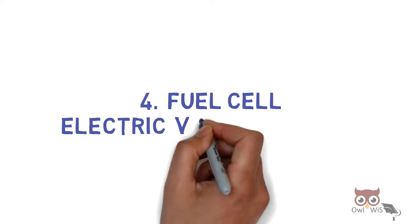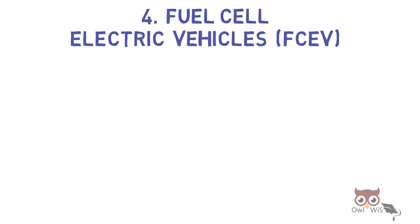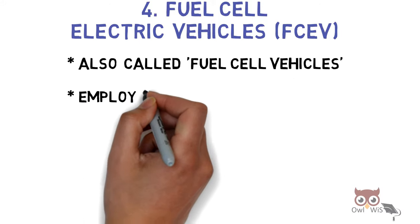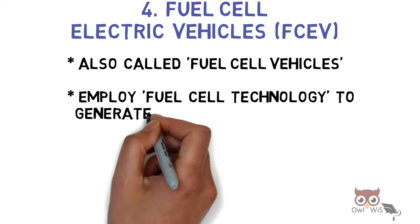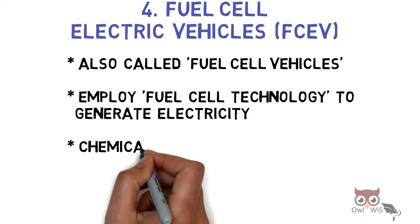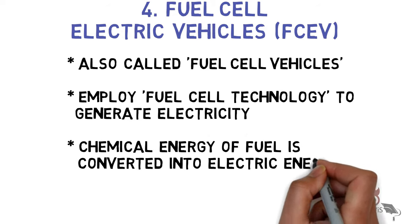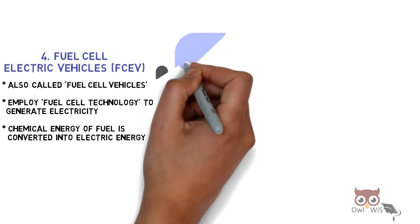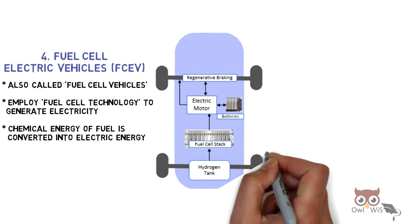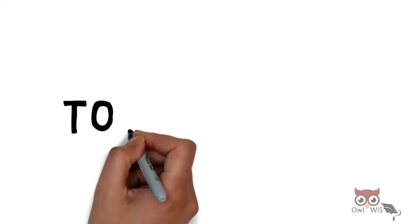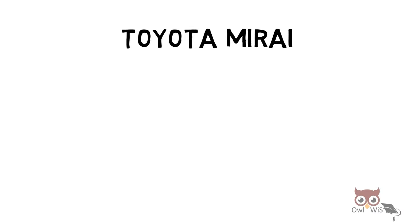Fuel Cell Electric Vehicle (FCEV), also called fuel cell vehicles, employ fuel cell technology in order to generate electricity. Here, chemical energy of fuel is converted into electrical energy. As you can see, the fuel here is hydrogen, which is used in order to generate power. Toyota Mirai is an example of FCEV.